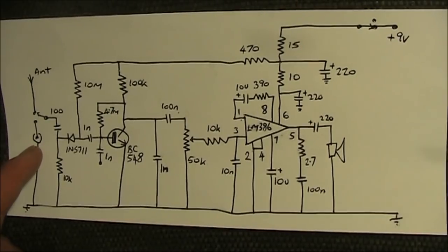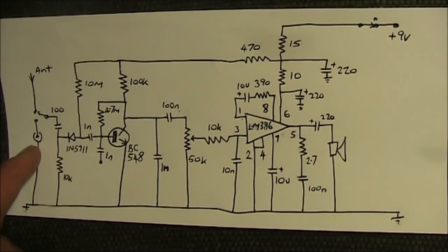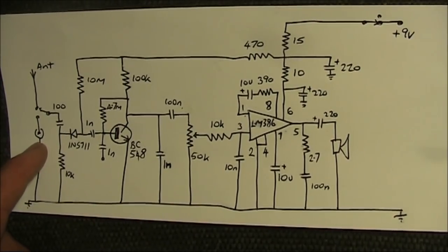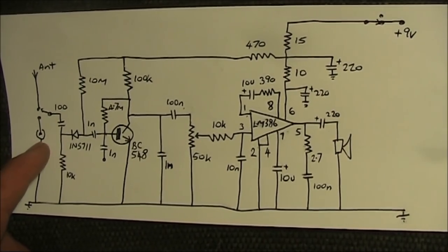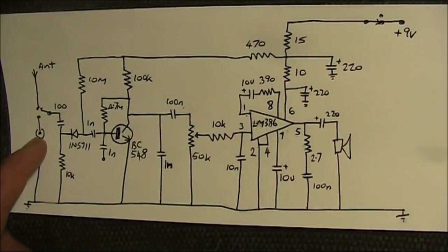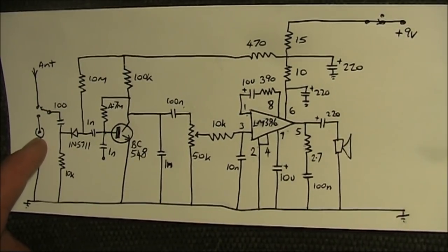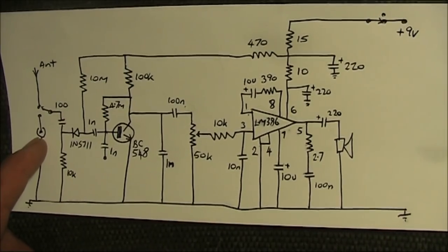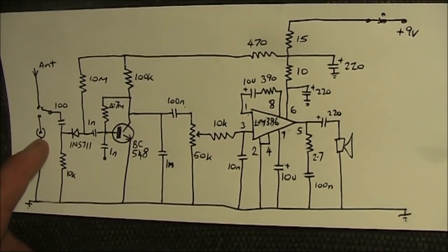If you want, you can connect a tuned circuit here, and that would give you a bit of selectivity. You could make it an AM broadcast receiver, or if you used a smaller coil and variable capacitor, it could pick up the aircraft band. It won't be that sensitive, but you will be able to hear signals, especially if you're near an airport.